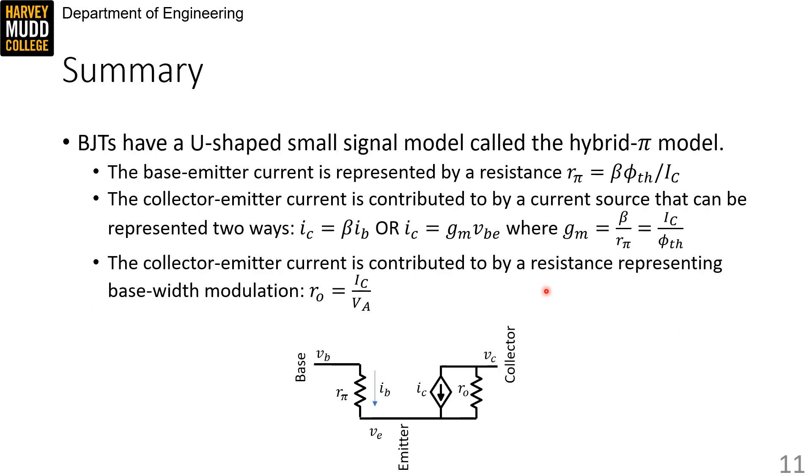In summary, BJTs have a U-shaped small signal model, which it turns out is called the hybrid pi model. The base emitter current is represented by a resistance R pi that's equal to beta times phi TH over IC. The collector emitter current is contributed to by a current source that can be represented two ways. IC is either equal to beta IB or GM times VBE, where the transconductance GM is beta over R pi or IC over phi TH.